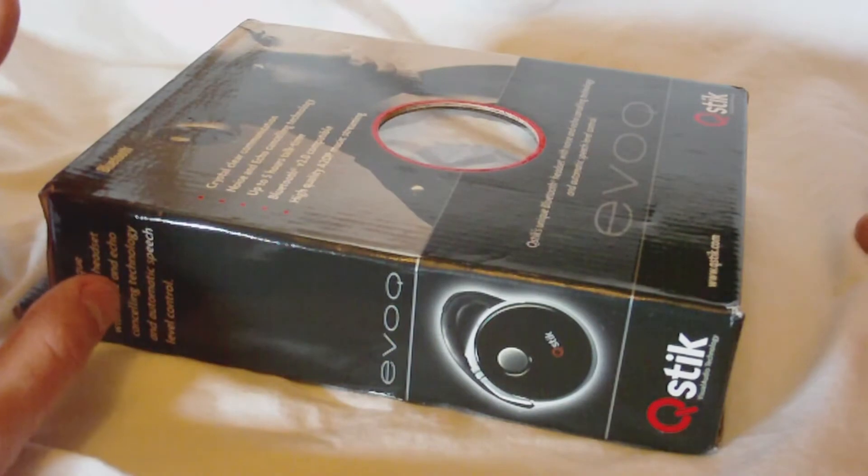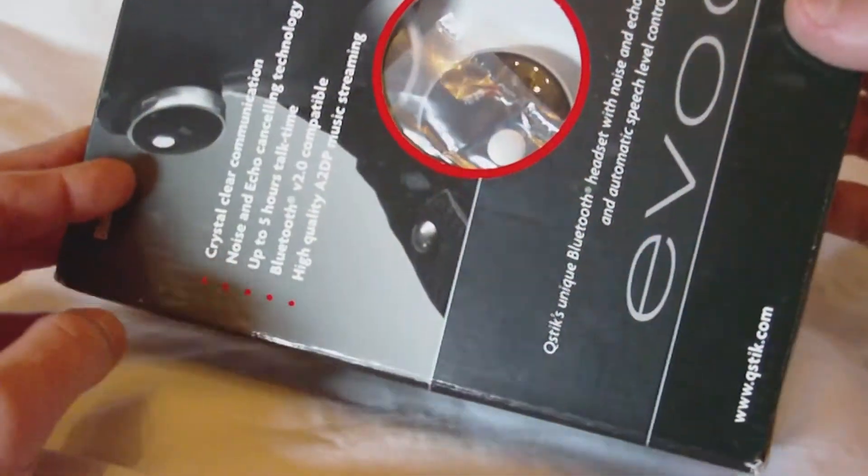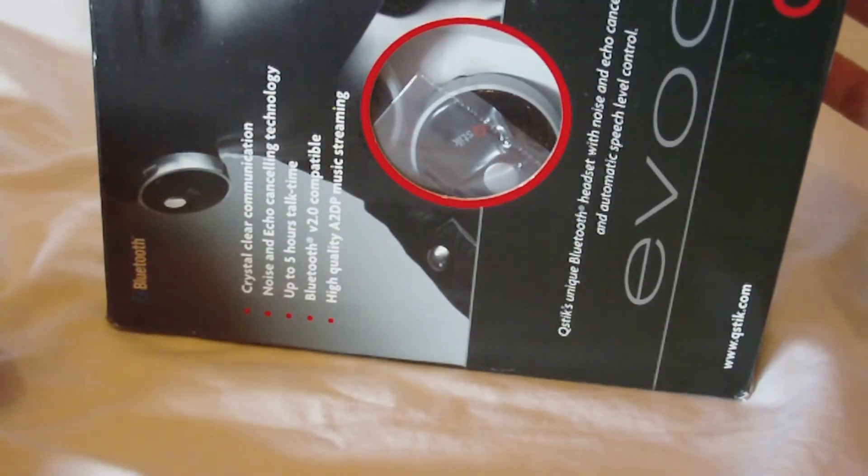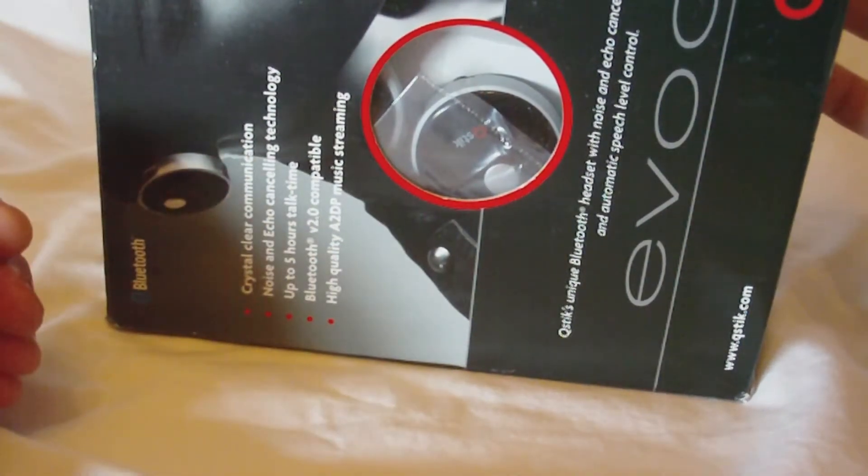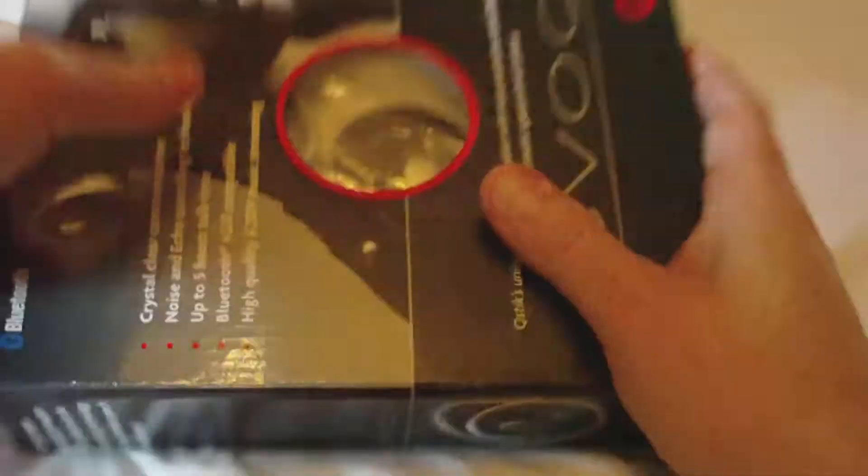This is from QStick. It's called the EVOC. Crystal clear communication, noise and echo cancelling technology, 5 hours talk time, Bluetooth version 2, and it features A2DP music streaming as well.